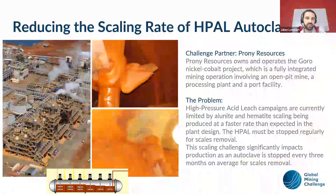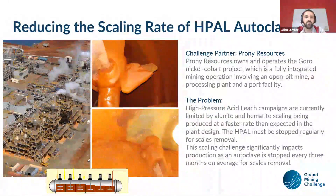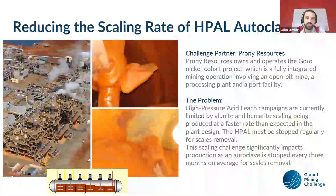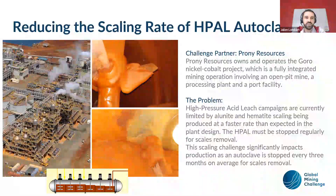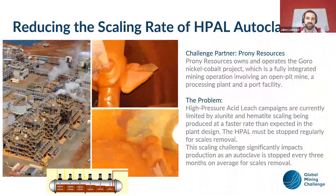We usually stop one autoclave after this time just to do maintenance and remove all the scales, but sometimes we are surprised to find that the scale thickness was not that high and we would have been able to run the autoclave longer. If we had a method to measure the thickness of the scale crusts in the autoclave, that would be a first solution — we would know exactly when to stop for maintenance and potentially gain some days of production.